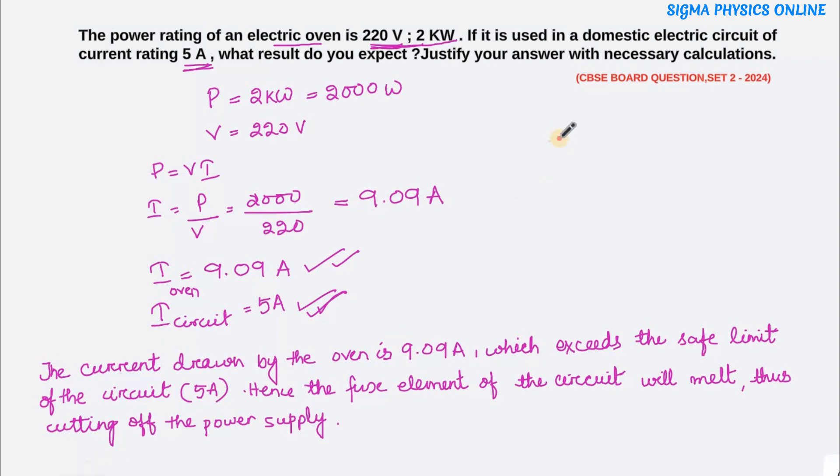But if there is no fuse, suppose in case there is no fuse, what will happen? There will be a huge current drawn. This 9.09 ampere current will be drawn. But if there is no fuse in the circuit, then a huge current will be drawn by the oven that is 9.09 ampere. This will cause an overloading in the circuit because the circuit is allowed to carry a current of 5 ampere only within the safe limit. This overloading will cause a short circuiting in the circuit because the overloading will result in the melting of the PVC coating of the wires and this will cause a short circuiting which will lead to a fire in the circuit.